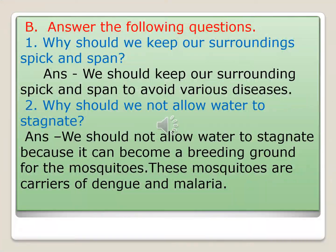Now here starts our question answers. Answer the following questions. The first question is: why should we keep our surroundings spick and span? The answer is we should keep our surroundings spick and span to avoid various diseases. If we keep our surroundings clean, we will be germ-free and disease-free. But if we are dirty and garbage is lying around, we will catch different diseases because of viruses and bacteria lying in the garbage.